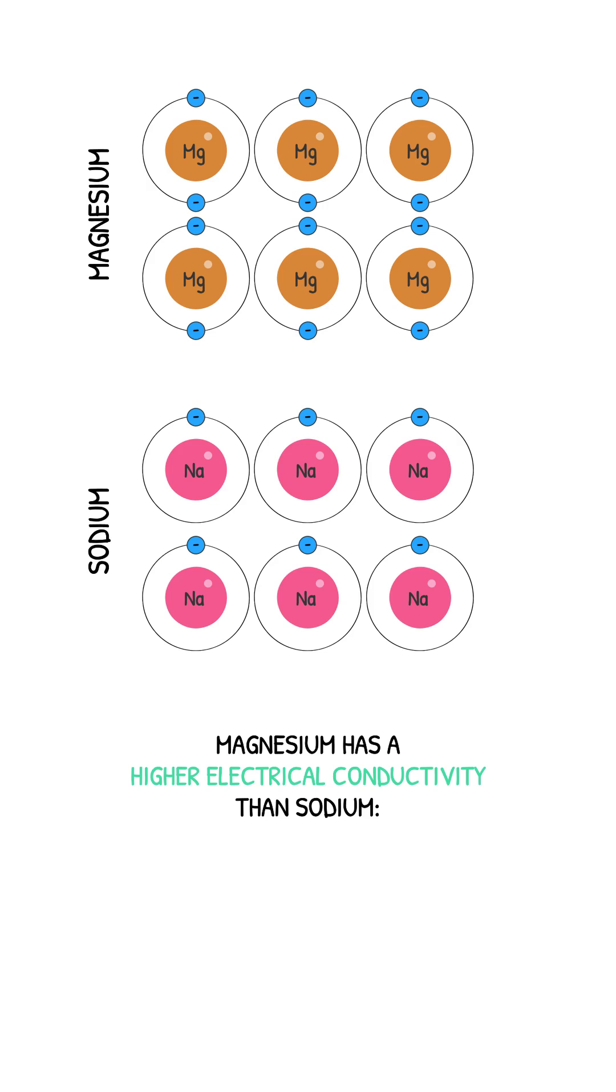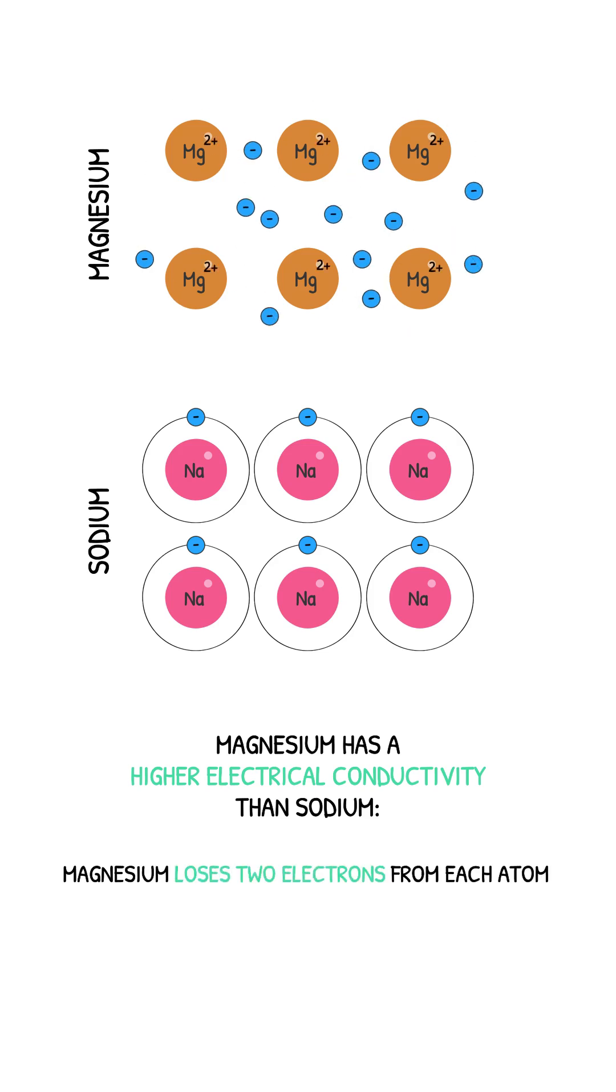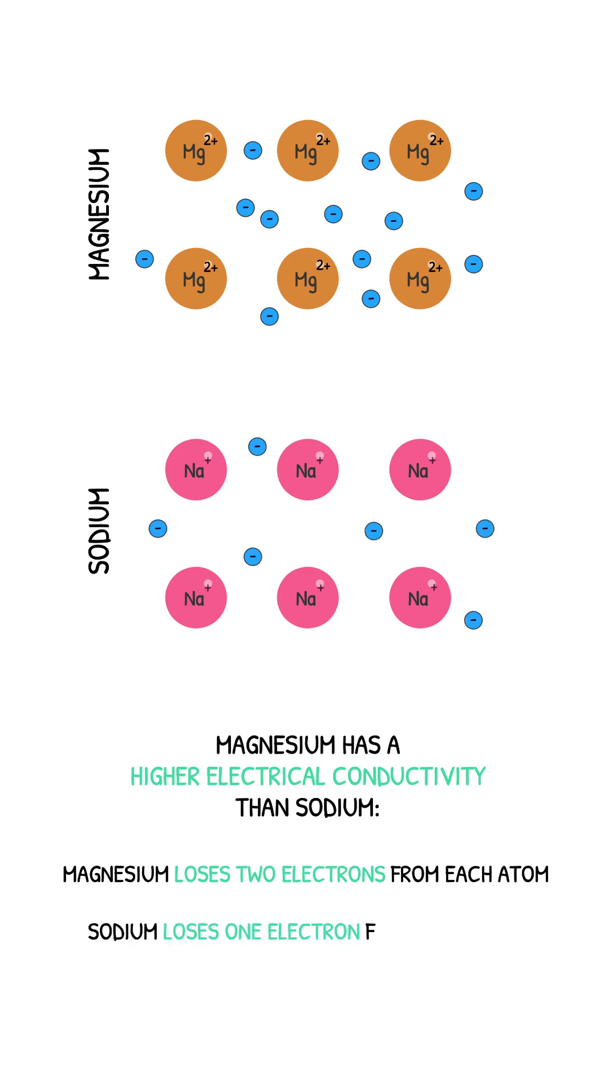when magnesium atoms form metallic bonds, each atom will lose two electrons from its outer shell. However, when sodium reacts to form a metallic bond, each atom only loses one electron from its outer shell.